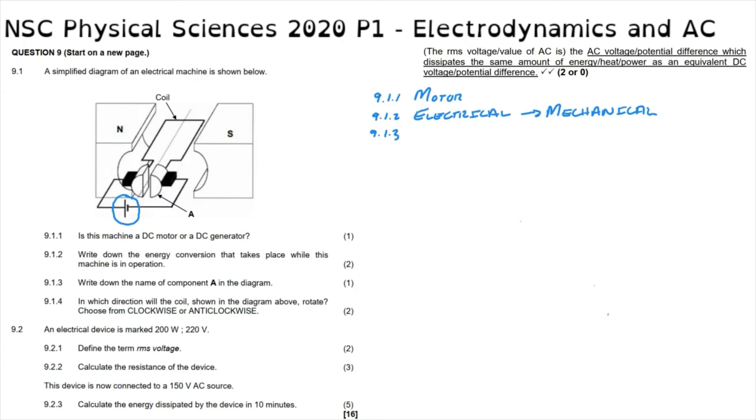Question 9.1.3: write down the name of component A in the diagram. Component A in the diagram is what is responsible for taking the current from the external circuit over here to the internal circuit, which is the coil that is inside the magnetic field. As we can see very clearly, there's a split or there's a space between those two sides of the ring. So we say that this component is called either a split ring or another name for it is a commutator. Both of these are what makes this into a DC motor. It converts direct current in the external circuit to direct current in the internal circuit.